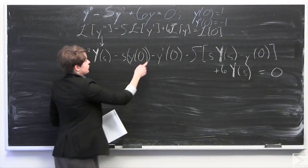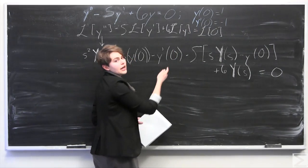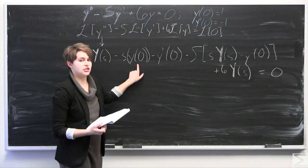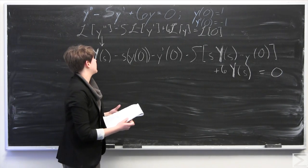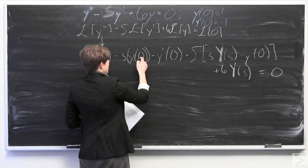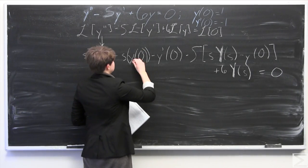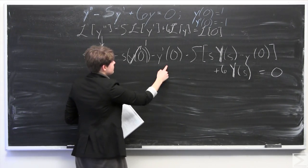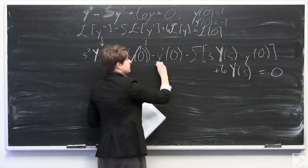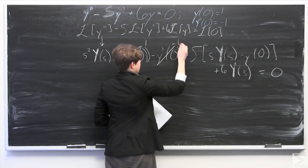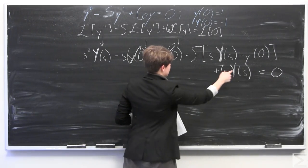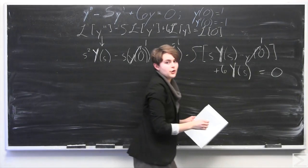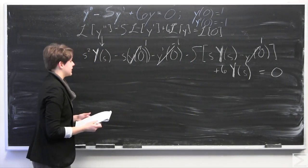Now we have these initial conditions, so I'm going to plug them in to simplify and get rid of these little y's. So y(0) is just 1, so that term goes to 1. y prime(0) is negative 1. And then y(0) again here is 1.